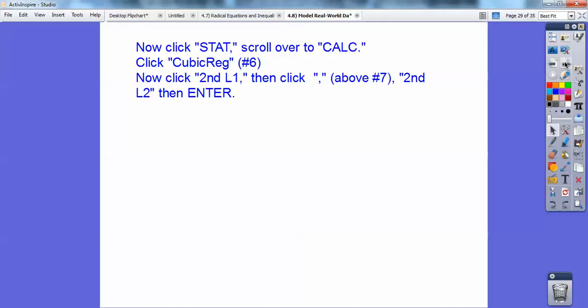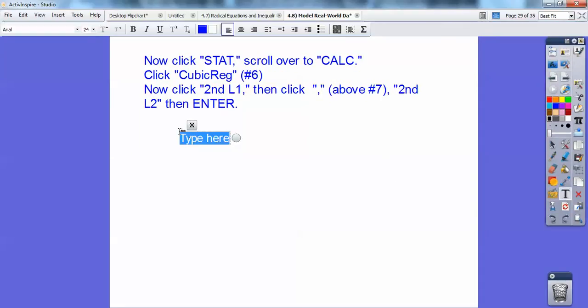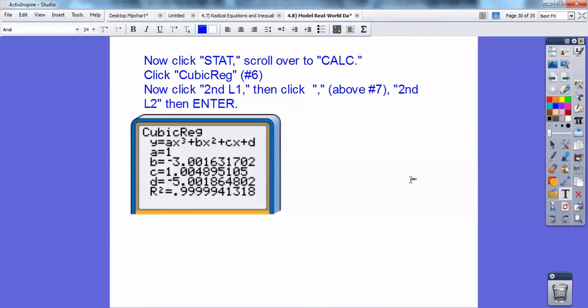So now, let's go click stat. Go ahead and click stat again and then scroll your top over to calculate. And then click cubic regulation. So we're going to hit cubic, which on my calculator is number six. And I chose cubic because there's two humps. Now click second function list one. And then click your comma button, which is above the number seven. And then hit second function list two. And it should be this. It'll give you something that looks like this. You'll see in your calculator, c-u-b-i-c-r-e-g. And you're going to go list one, comma, list two. And then you're going to hit enter. Then enter.